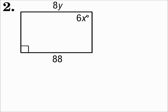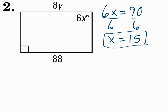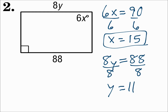On number two, we're dealing with angle measures and side measures. Look at the angles first. This parallelogram has a right angle, which means all four angles are right angles. So 6x has to equal 90. Divide both sides by 6 and x is 15. Now look at the sides. Opposite sides of a parallelogram are congruent, which means that 8y has to equal 88. Divide both sides by 8 and y is 11.